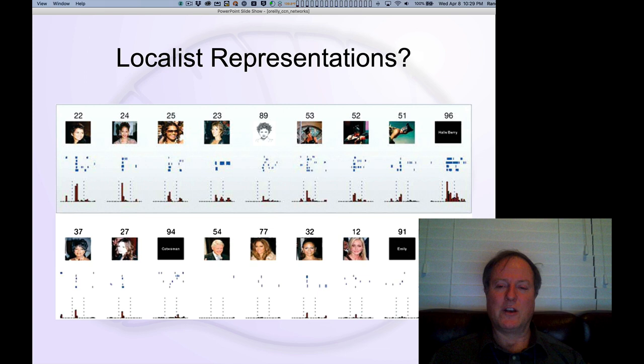We're looking at the Halle Berry neuron. This is a very famous example that was published in recordings from human brains, a very early demonstration where you could actually record individual neurons in human brains from patients who were undergoing testing associated with epilepsy. While they were in there, they were able to record the responses to these different pictures.